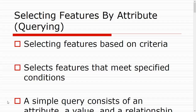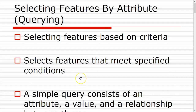All the data layers we have in our table of contents have an associated attribute table. Because of that association, we can begin to ask our data questions based on certain criteria. For instance, how many parcels are in residential land use? Or how many parcels have a total value of greater than $100,000? Essentially, we are selecting features that meet specified conditions and certain criteria.